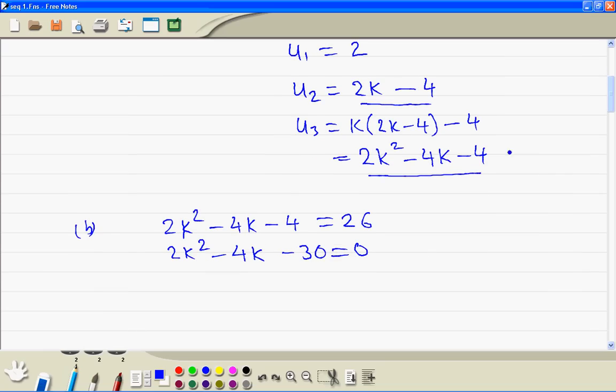Because 2 is a common factor, we divide every term by 2. So we have k squared minus 2k minus 15 equal to 0. Now we can factorize this. We are looking for factors of minus 15 which add up to minus 2. So there must be plus 3 and minus 5.